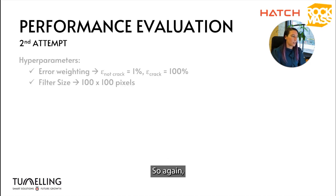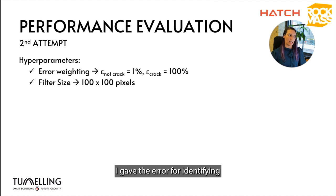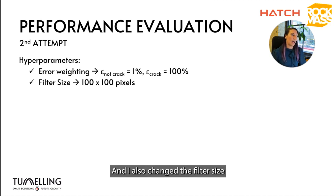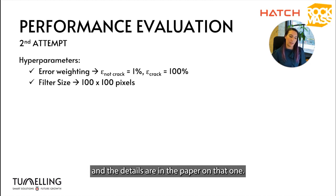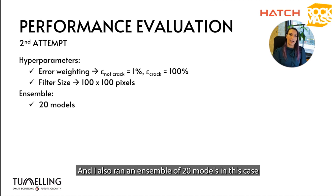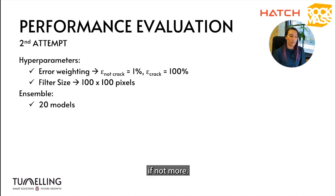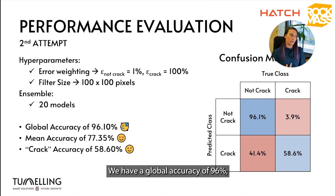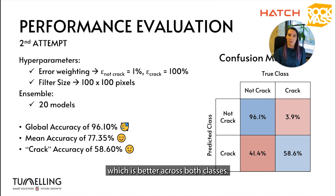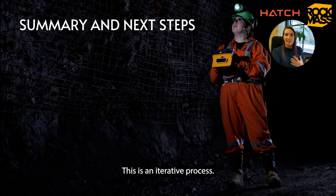Let's look at the performance of the second attempt. The two hyperparameters I optimized were error weighting — 1% weight for no-crack and 100% for crack — and filter size, with best performance at 100×100 pixels. I also ran an ensemble of 20 models. The global accuracy was 96%, lower than before, but the mean accuracy improved to 77% across both classes, and we were now able to identify crack locations with almost 59% accuracy — better than guessing. This is an iterative process and there are more steps that can further improve performance.